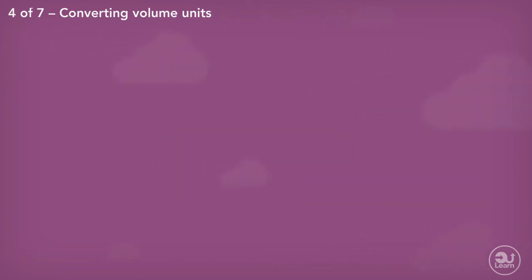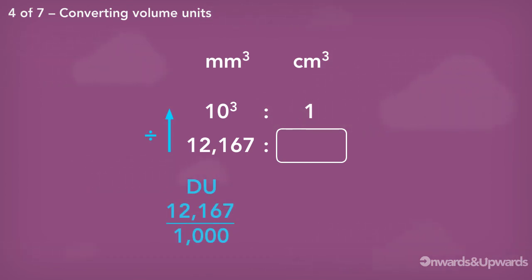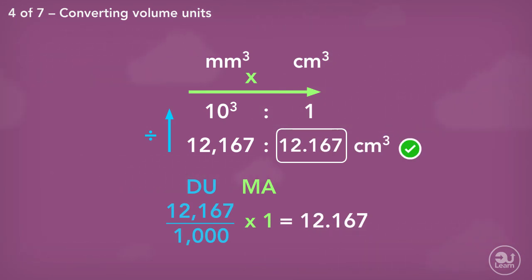So laying out our information like we usually do. 12,167 divided by 10³, which is 1000, multiplied by 1 equals to 12.167 centimeters cubed.